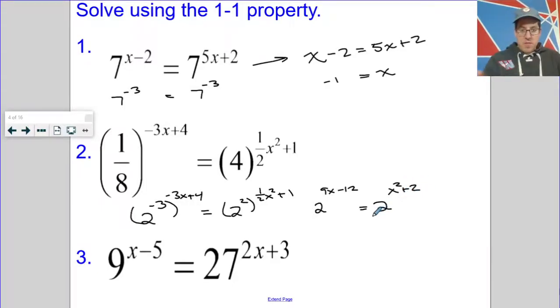2 to the 9x minus 12 equals 2 to the x squared plus 2. Now I've got the same base, I can set the exponents equal to each other and solve. Always remembering to check my answers. So go ahead, you finish this one and see what answers you get.